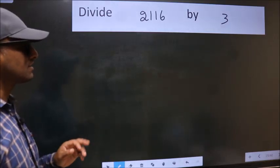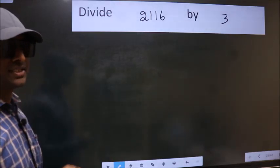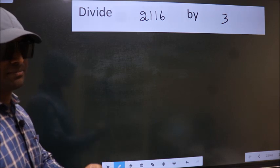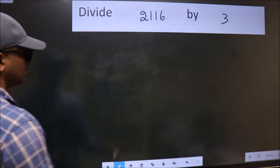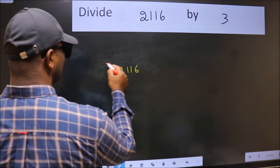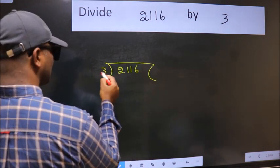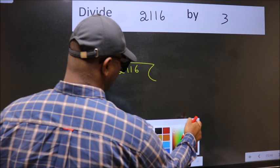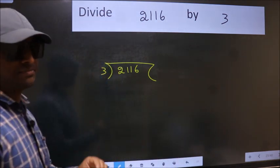Divide 2116 by 3. To do this division, we should frame it in this way: 2116 here, 3 here. This is your step 1.